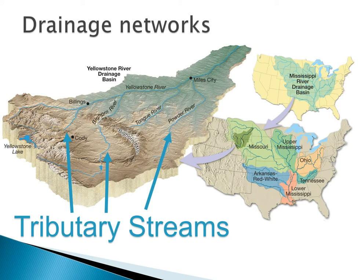Each drainage network lies within a drainage basin. The drainage basin is the entire area that is drained by a single stream and its tributaries. Here you can see an outline of the entire Mississippi River drainage basin — it's the largest one in the United States, and now one of the largest in the world.